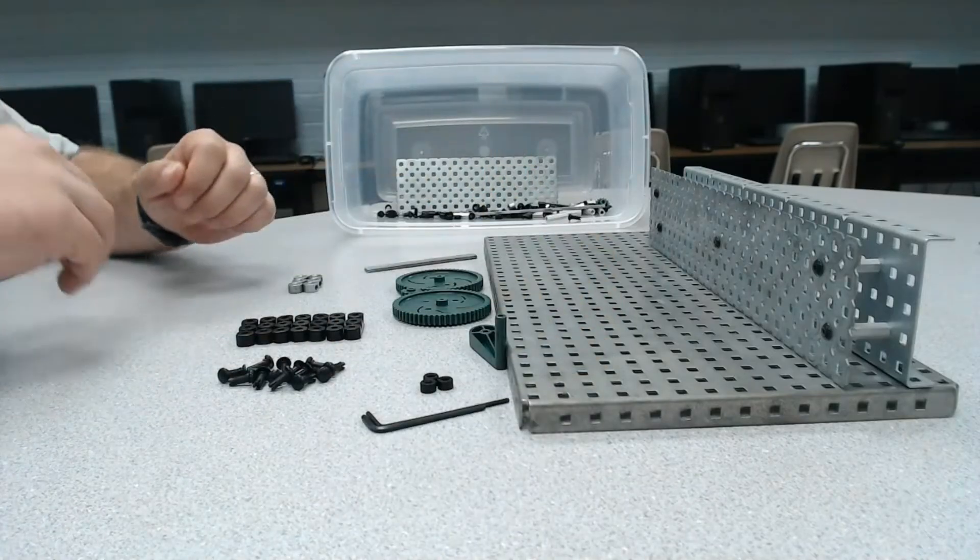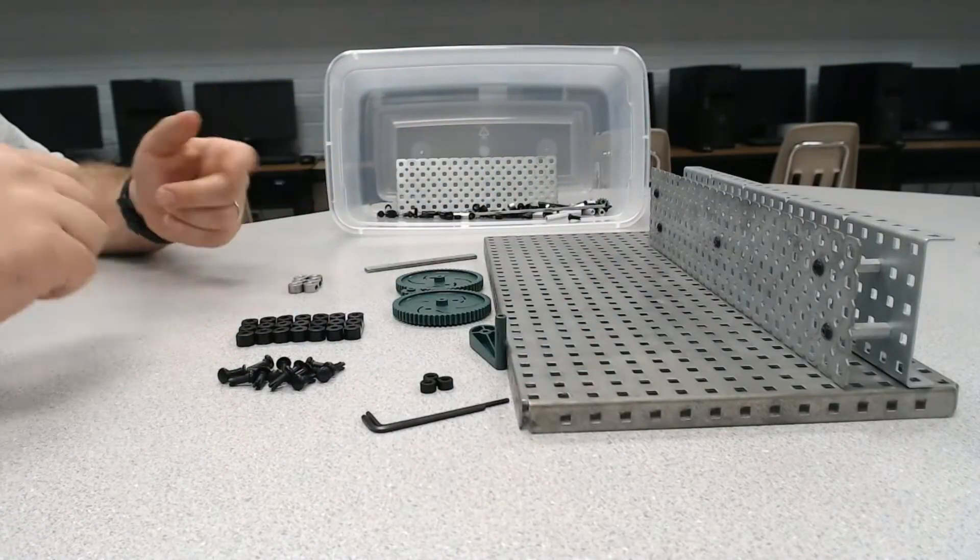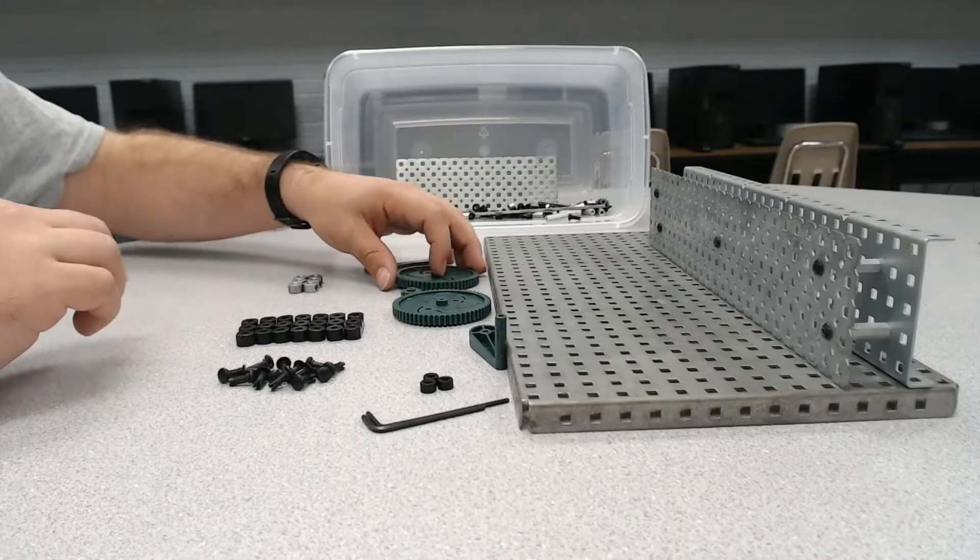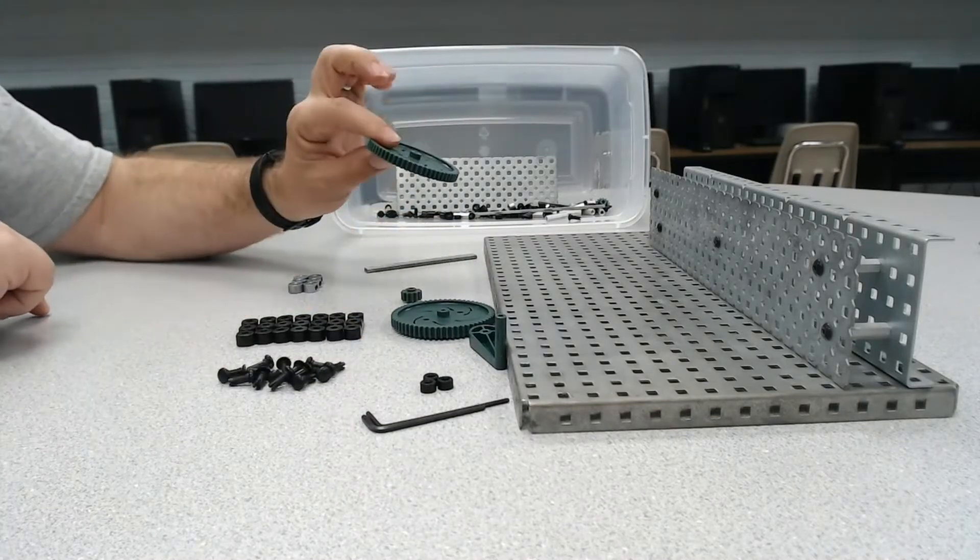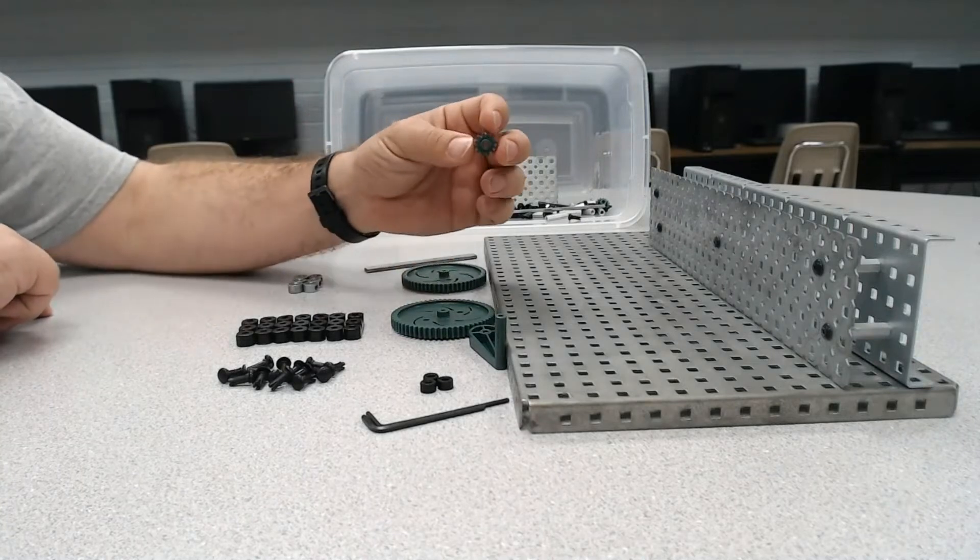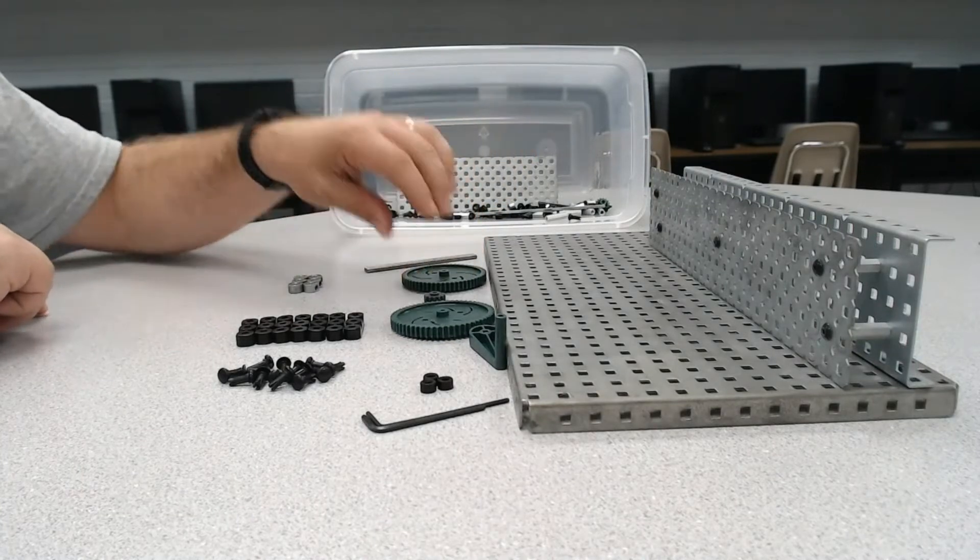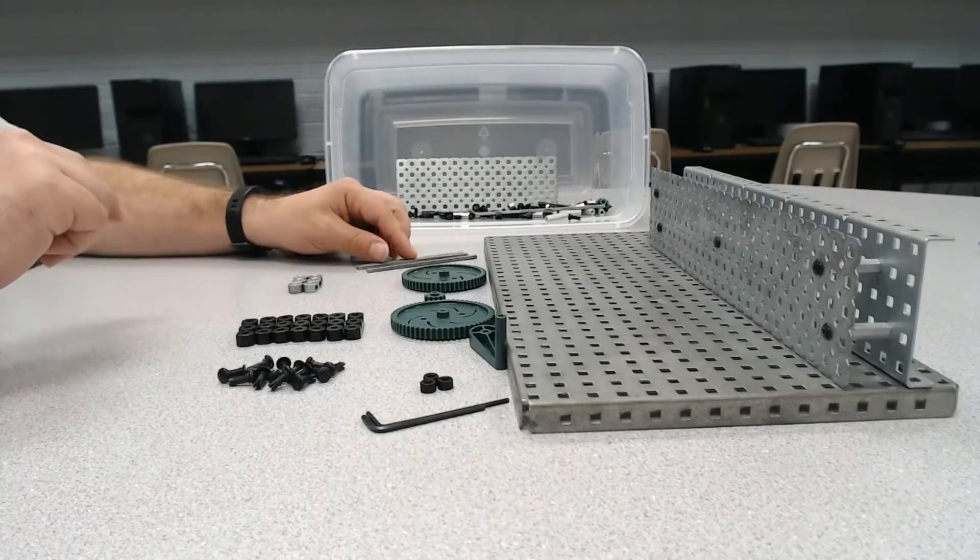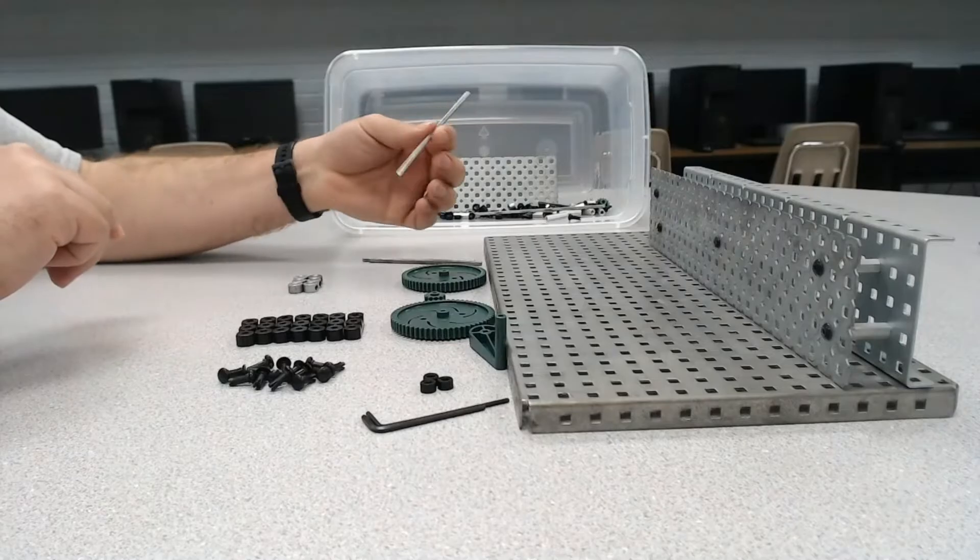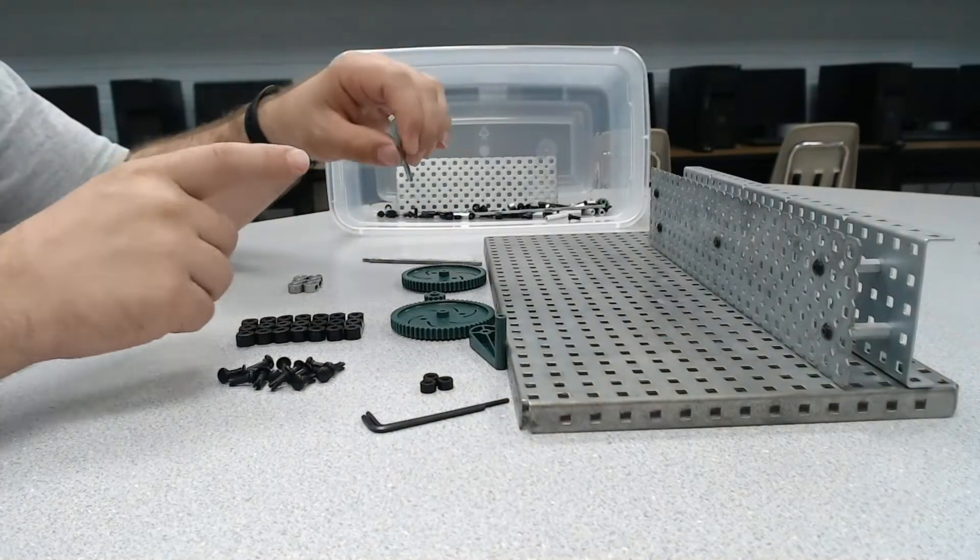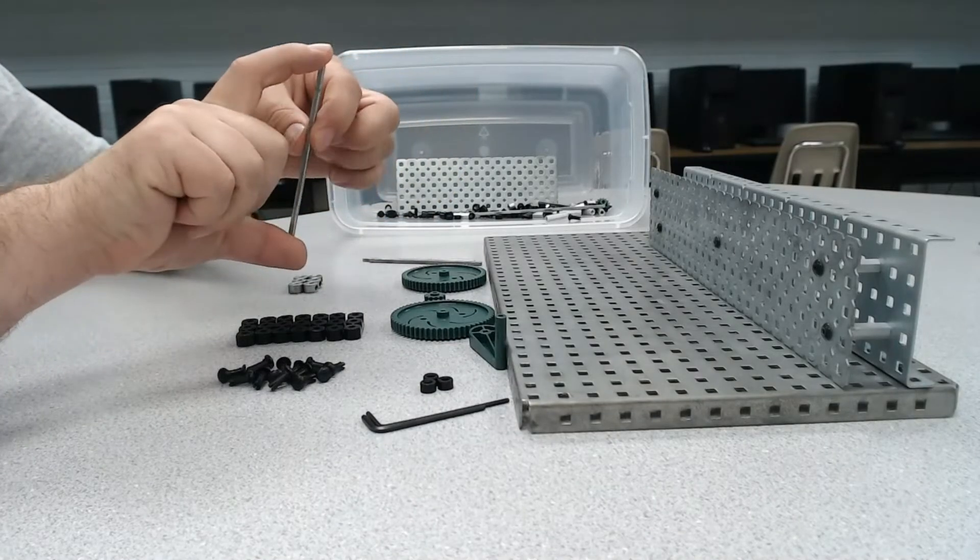I have my base platform here that we used in a prior video, and now we're going to add these parts. Let's get started with the gears. We're going to need two of these 60 tooth gears and one 12 tooth gear. For each gear, we are going to need a drive shaft or axle. In this case, we've used a four inch length.